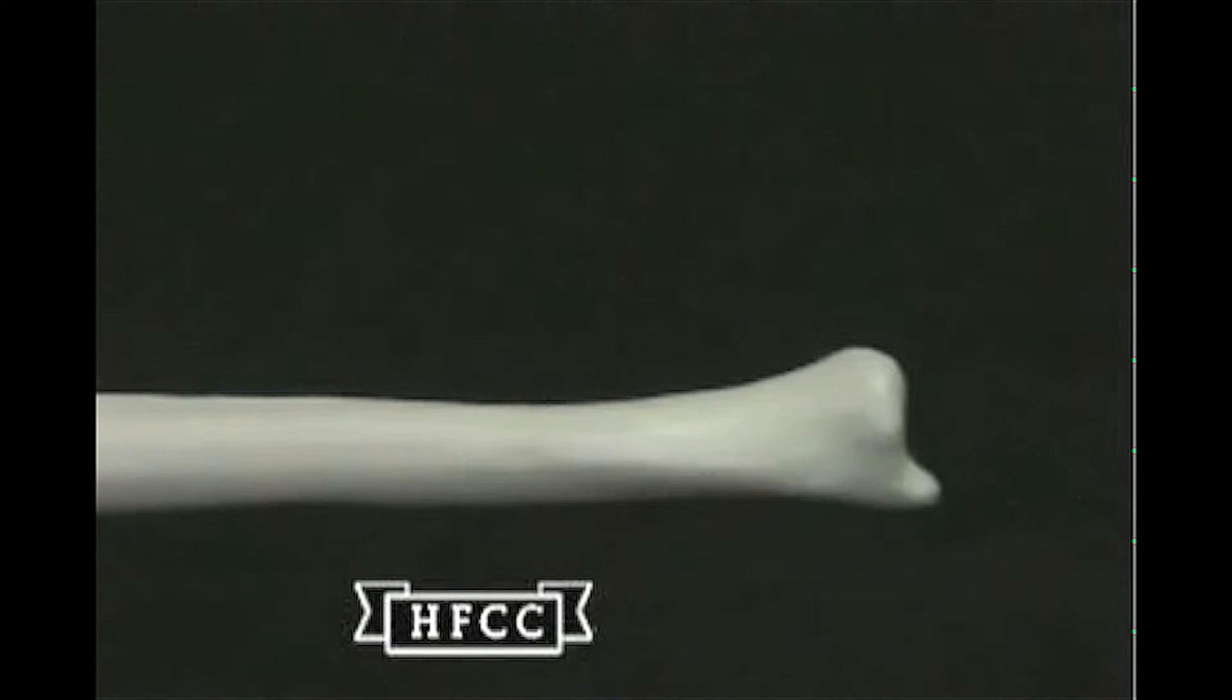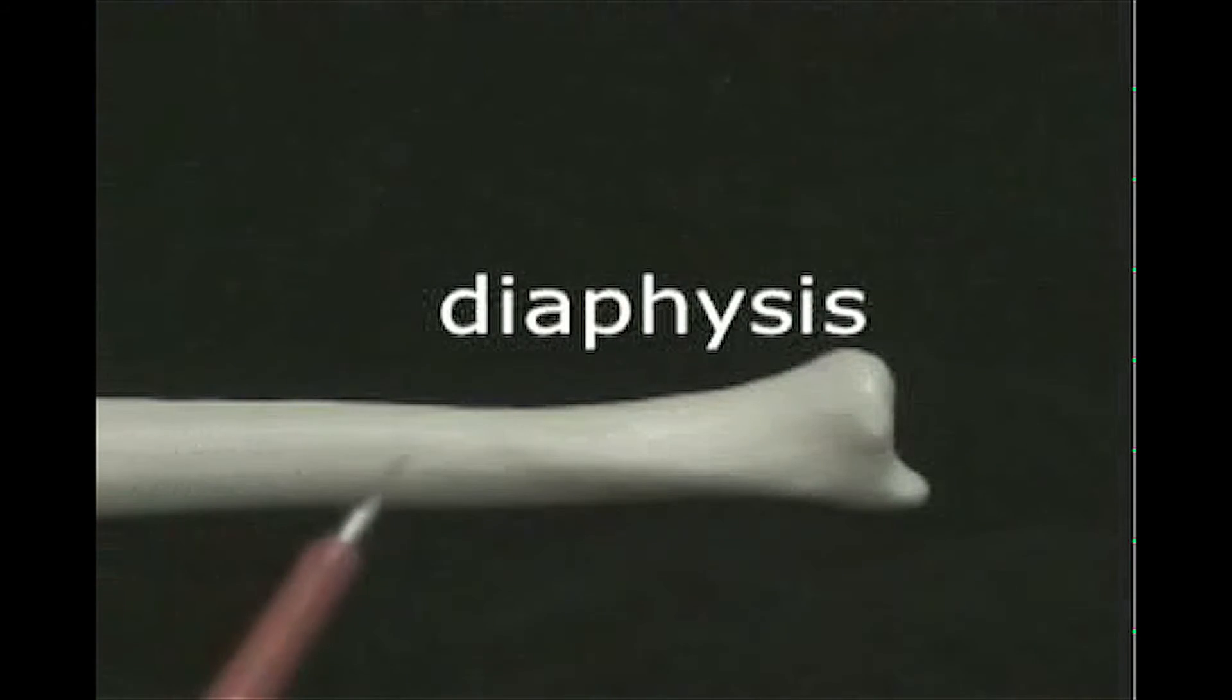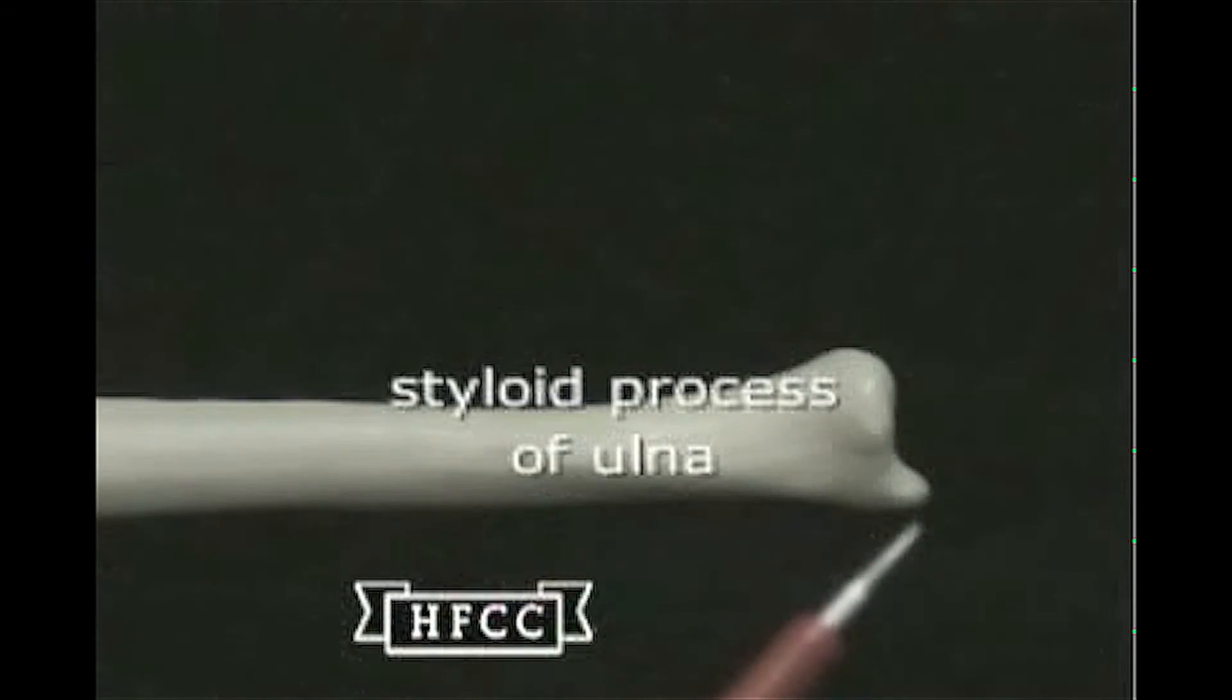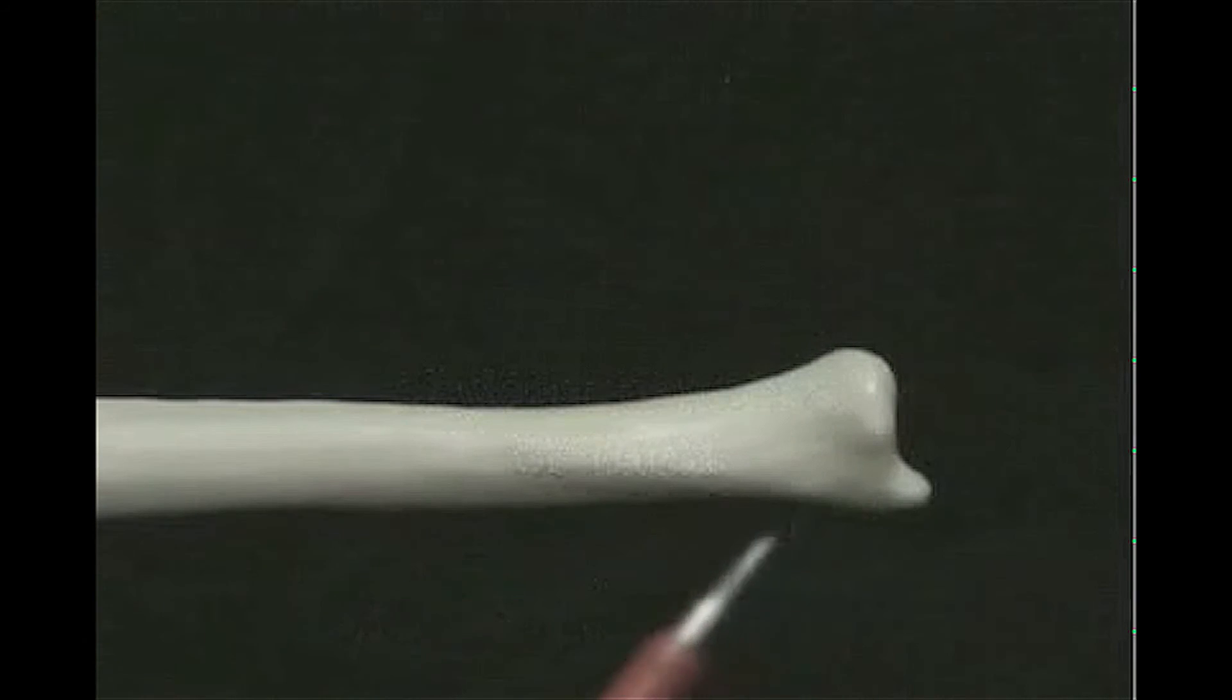Now we go to the distal end. And looking down here, this is the diaphysis, typical of all long bones, also called the shaft. And this little point here is the styloid process of the ulna, a very small projection coming off the tip of the bone.